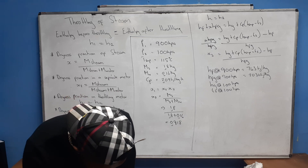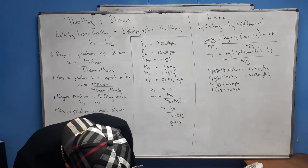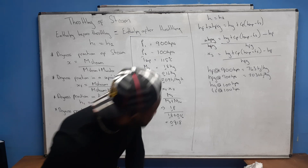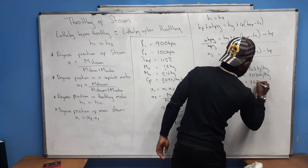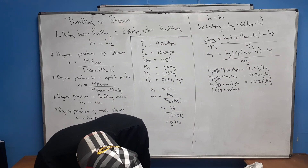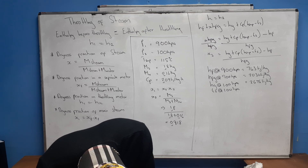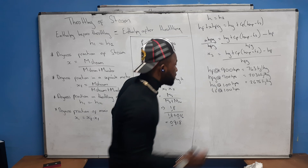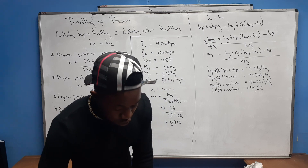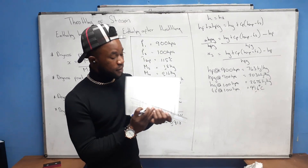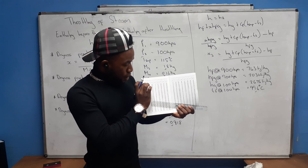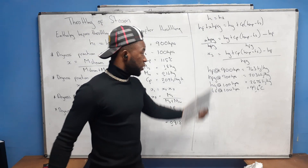From the steam table at 100 kPa: hg = 2676 kJ/kg and the saturation temperature T_s = 99.6°C. The steam table gives pressure, temperature, volume and other properties — you just locate the given pressure and read off the value you need.